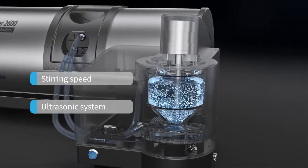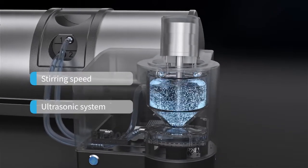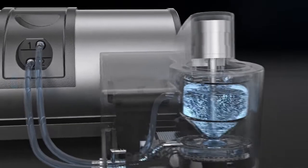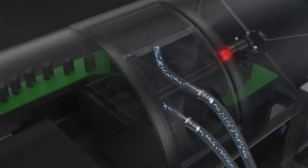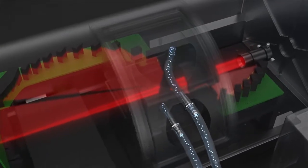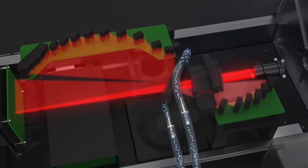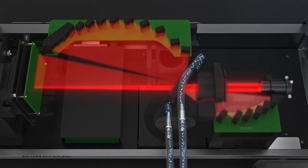The BetterSizer 2600 is superior in the combination of Fourier and inverse Fourier design. This smart design allows accurate measurement over the whole range, from nano to millimeter scale. The tilted sample cell design significantly diminishes the effect of total internal reflection.